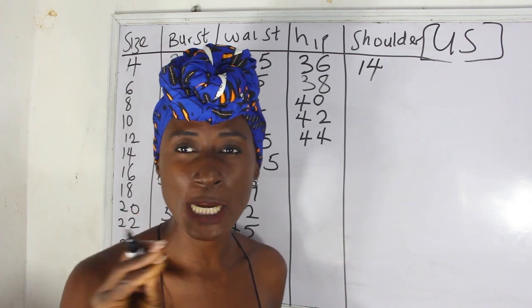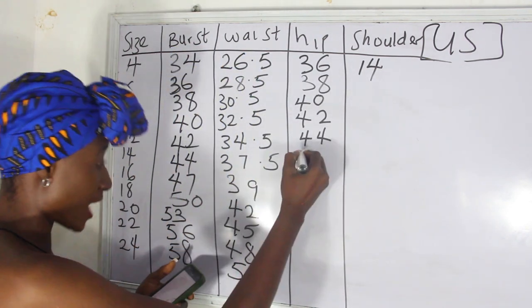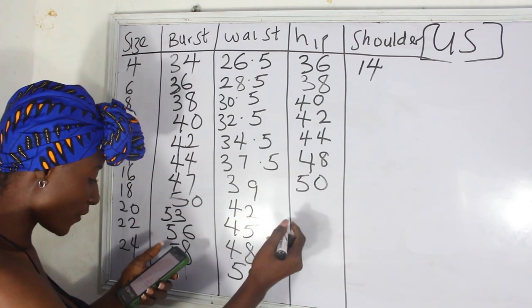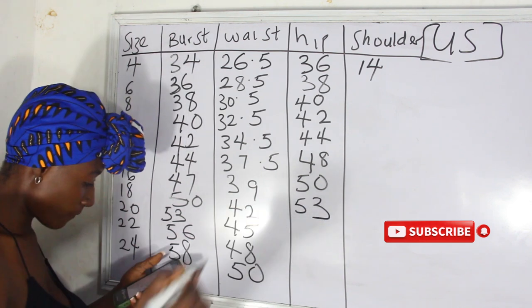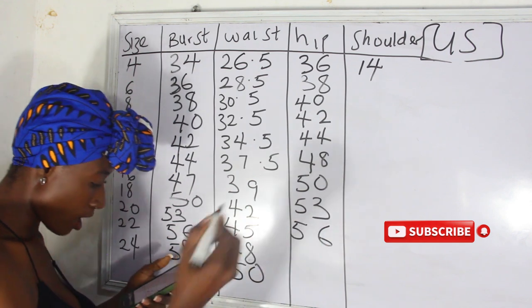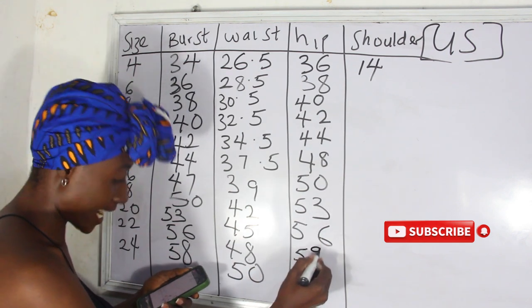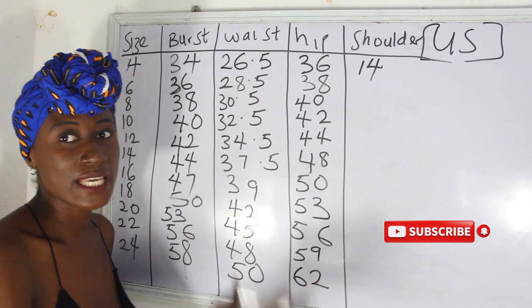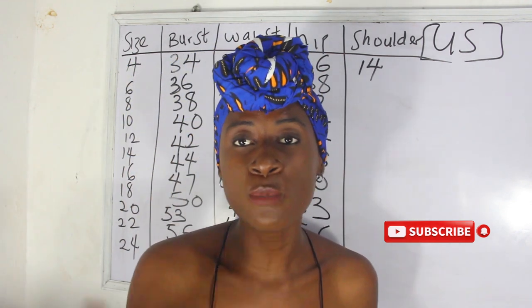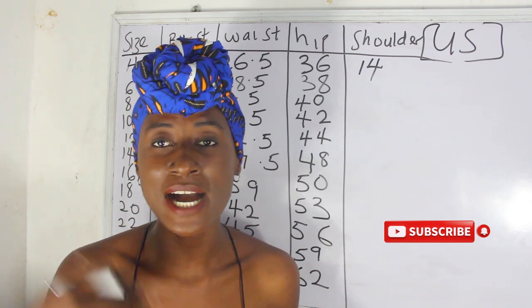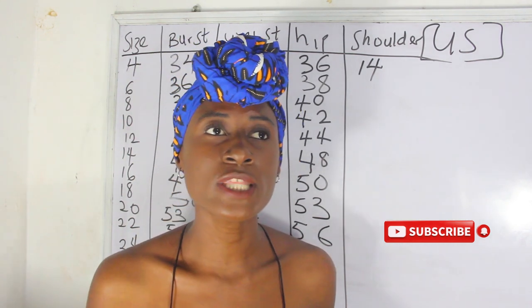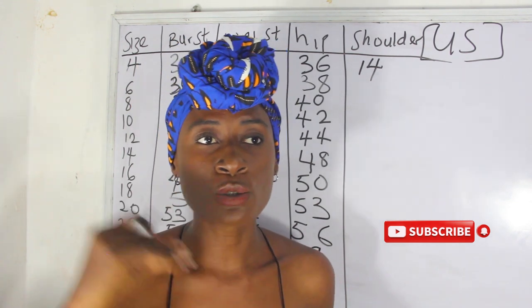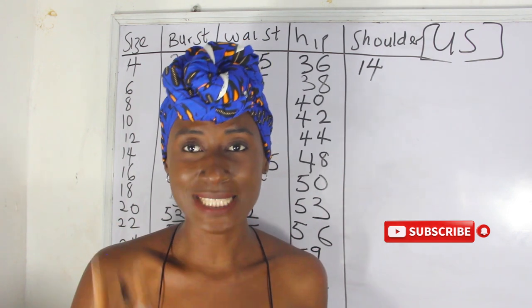From size 14 the hip increments change a little. Size 14 is 48 inches. Size 16 is 50 inches. Size 18 is 53 inches. Size 20 is 56 inches. Size 22 is 59 inches. Size 24 is 62 inches. These are the hip measurements for all sizes. Let me know in the comment section which is your largest part — hip or bust — and also let me know your size.